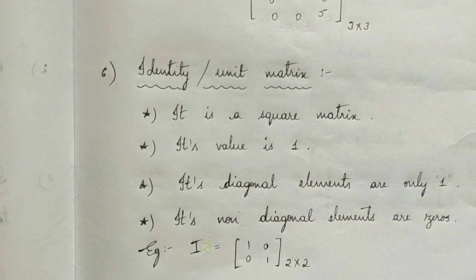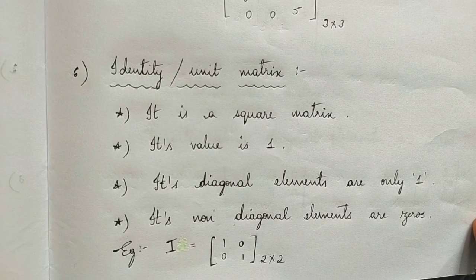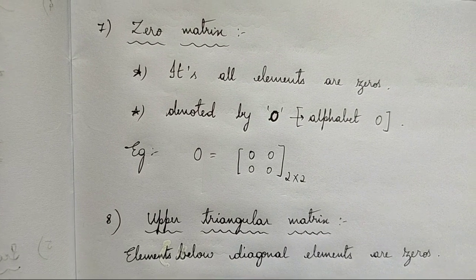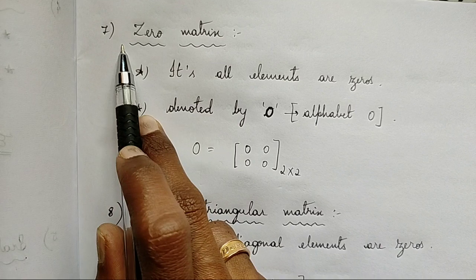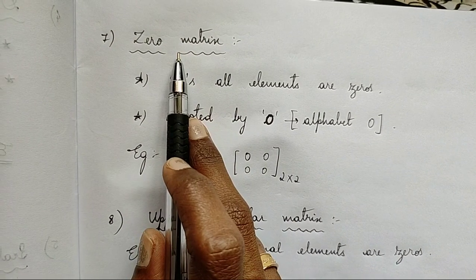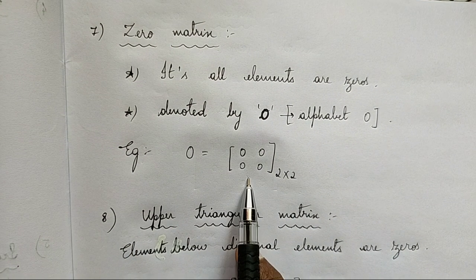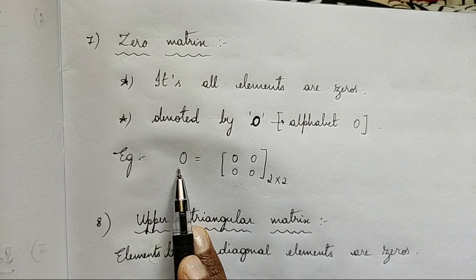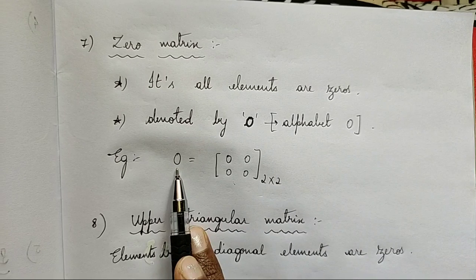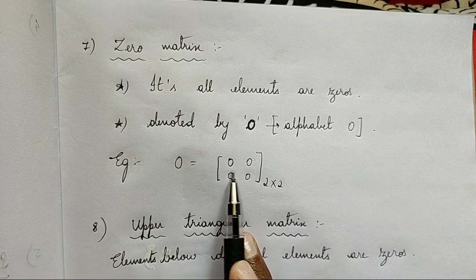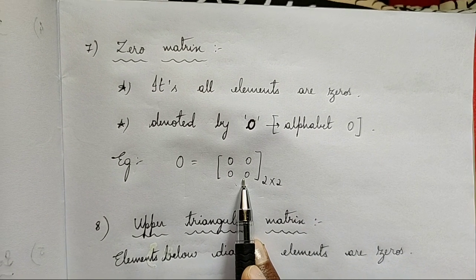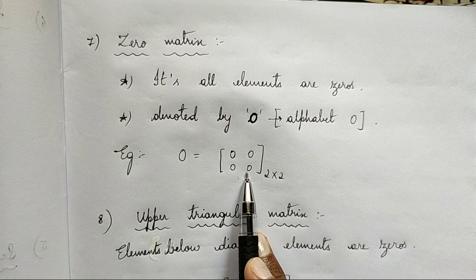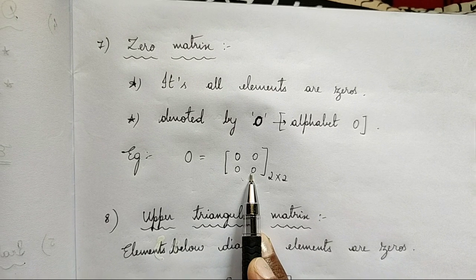Let's get into the next matrix — zero matrix. In the zero matrix, all the elements are zeros. This matrix is denoted by the letter O — not zero, but O. The matrix which has all elements equal to zero is called a zero matrix.